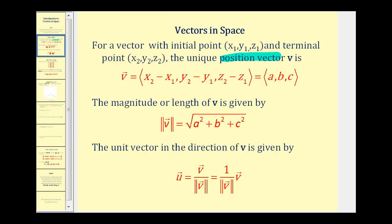To denote a vector, you can either use a lowercase letter in bold, or if bold print isn't available, use the letter V with a little arrow above it. The magnitude or length of a vector in space, or R3, is very similar to the magnitude of a vector in R2, except now we take the square root of the sum of the squares of the X, Y, and Z components.